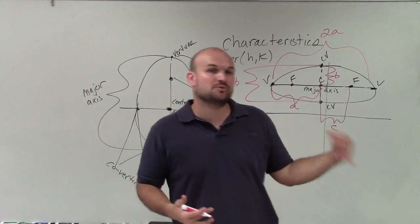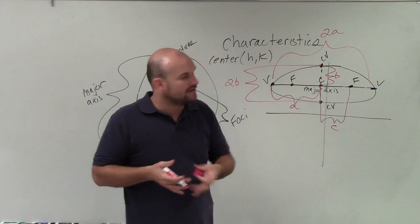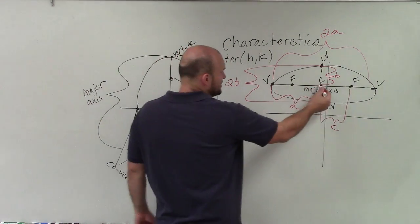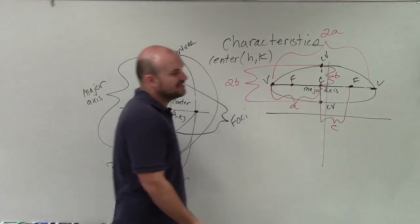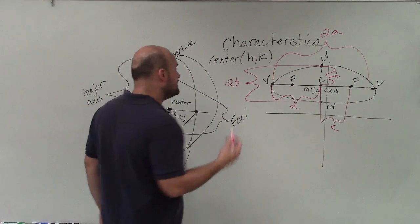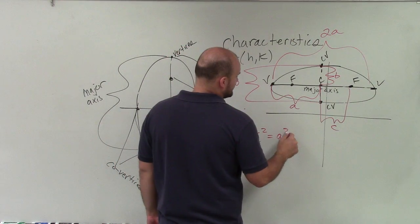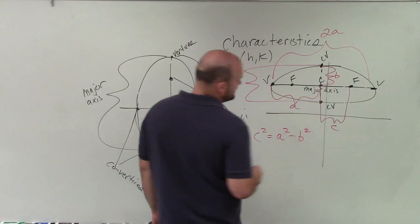But a lot of times when we're graphing, to find the value of your foci, we need to know the value of c, right? Because once we find the center, we just go left and right on the distance of c to find each foci. So the last kind of characteristics that's very important is c squared is equal to a squared minus b squared.